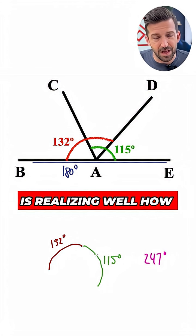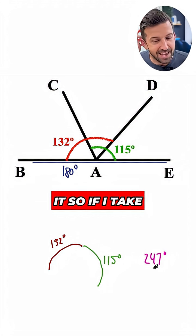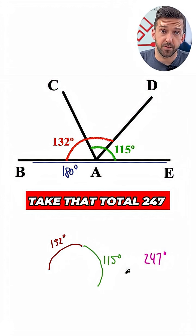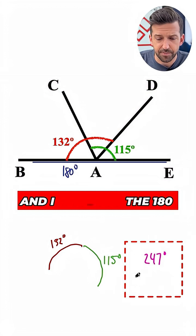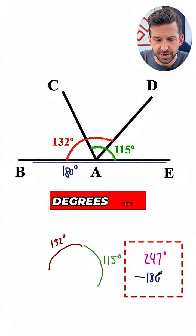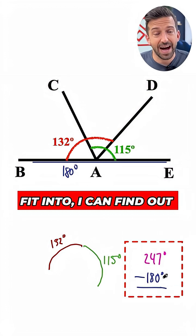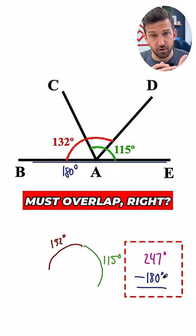The key to figuring this problem out is realizing, well, how much more than 180 is it? So if I take that total 247 degrees of rotation and I subtract the 180 degrees that they sort of have to fit into, I can find out by how much they must overlap, right?